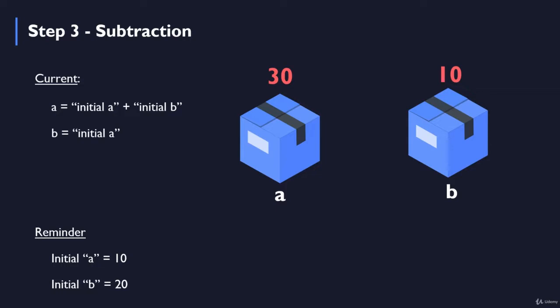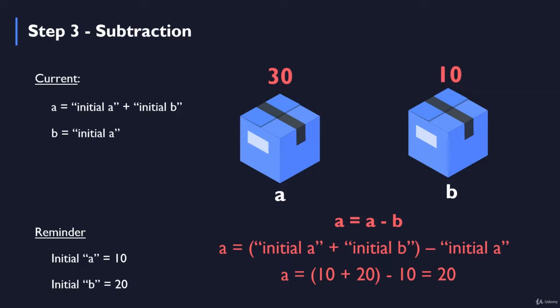For that, we are going to use the same step of using subtraction, as you've seen in the second step. So you go like A equals A minus B. You just replace the value of A in this equation. You say that A equals initial A plus initial B, which is the actual value of A at this point, minus the initial A, which is the value of variable B. Now, if you just put here the real values that you can see in the reminder here on the bottom left part of this slide, you can see that A equals 10 plus 20 minus 10, which is a total of 20. The initial A is being cancelled, and the variable A remains only with the value of initial B, which is 20 in our example.